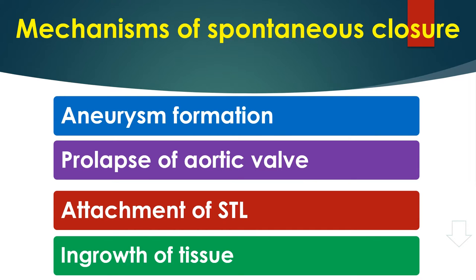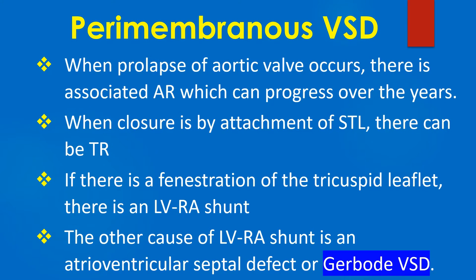The mechanisms of spontaneous closure include: 1. Closure by aneurysm formation; 2. Closure by prolapse of the aortic valve; 3. Closure by attachment of septal tricuspid leaflet; 4. Closure by ingrowth of tissue. When prolapse of the aortic valve occurs, there is associated aortic regurgitation which can progress over the years.